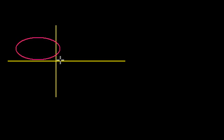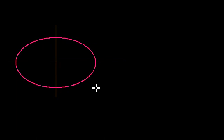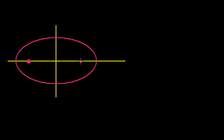Let me draw this all out. So that's my x-axis. If this is my ellipse, centered at the origin — it doesn't have to be, but for our purposes let's make it centered at the origin — if this is one focus point right here and this is the other focus point, this ellipse can be defined as the set of all points where if I take the distance of any one of these points on the ellipse to each of the focuses...